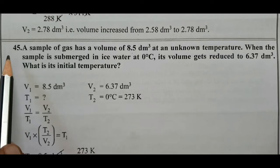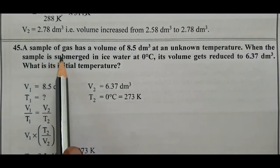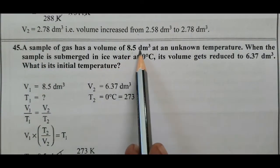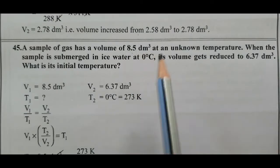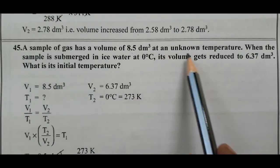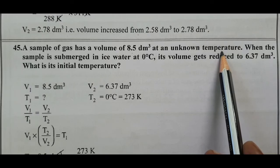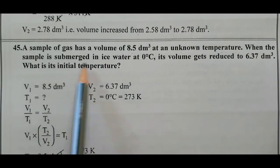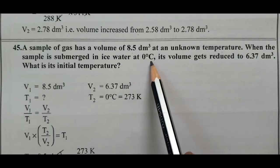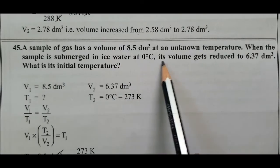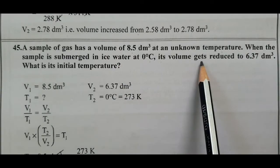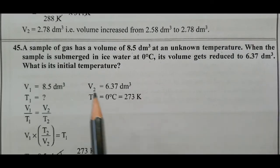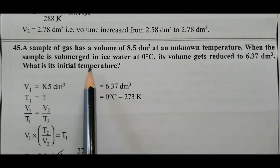Question number 45. A sample of gas has a volume of 8.5 decimeter cube at an unknown temperature. When the sample is submerged in ice water at 0 degree Celsius, its volume gets reduced to 6.37 decimeter cube. What is its initial temperature?